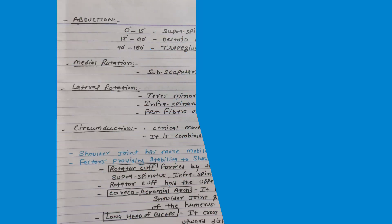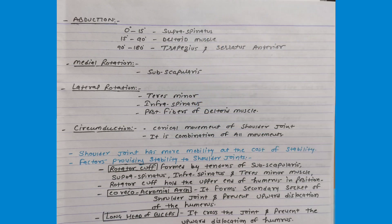Abduction from 15 to 90 degrees is due to the deltoid muscle, whereas 90 to 180 degrees involves the trapezius and serratus anterior muscle. Medial rotation is mainly due to the subscapularis muscle, whereas lateral rotation is due to teres minor, infraspinatus, and the posterior fiber of deltoid. The last action is circumduction, which is a conical movement of the shoulder joint and is a combination of all movements.